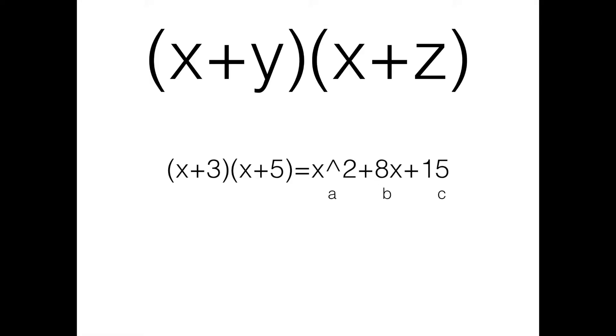Quantity x plus y times quantity x plus z is the factored form of a trinomial. y times z always has to equal c, and y plus z always has to equal b.